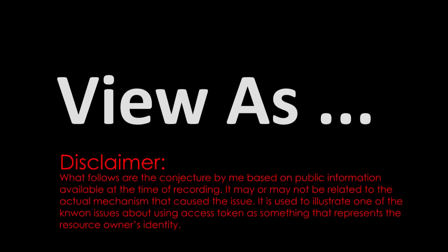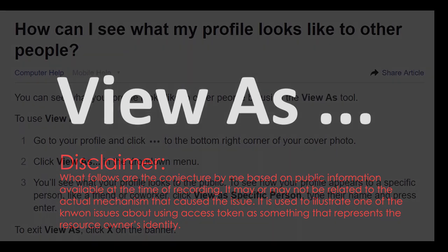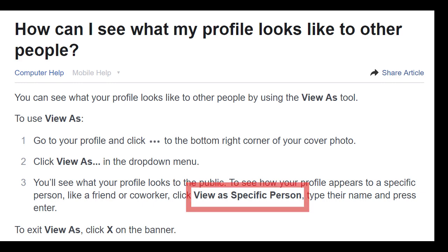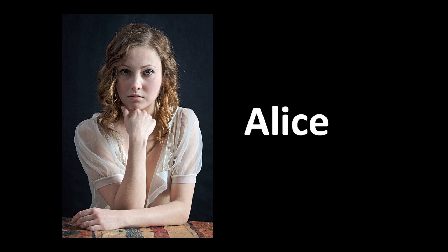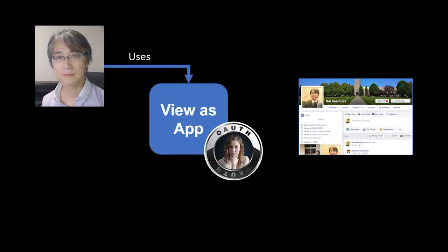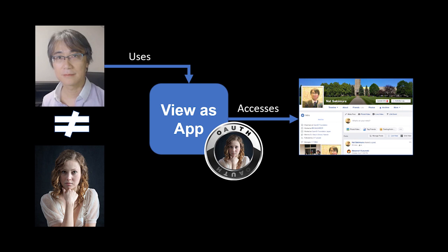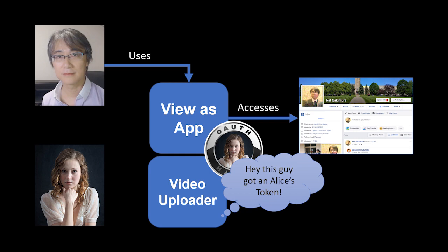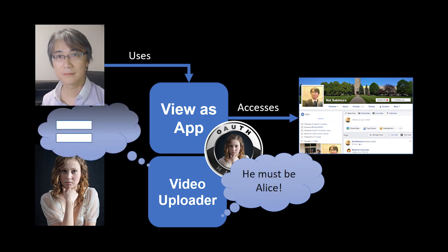Let's take an example of the ViewAs feature of a certain large social network that disabled this feature recently. It offered a feature called ViewAsSpecificPerson. Say that specific person was Alice. Using that feature, the JavaScript app in the browser got an access token that allocated the privilege granted to Alice when viewing my profile page, so that I can view how my profile page would look from Alice's perspective. But the fact that I got this token does not mean I am Alice. However, in this particular case, there seems to be another app — a video uploader app — that would interpret that I am Alice, and have the escalated privilege to perform that operation. Alice's account is now stolen. Repeat this end times for other users, and now you have access tokens for many users.